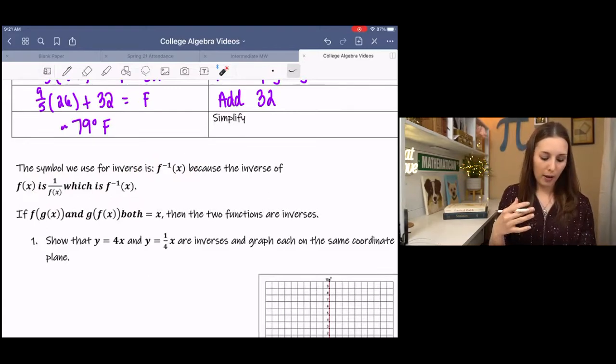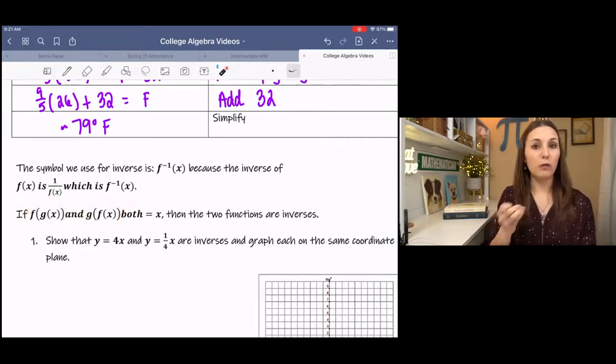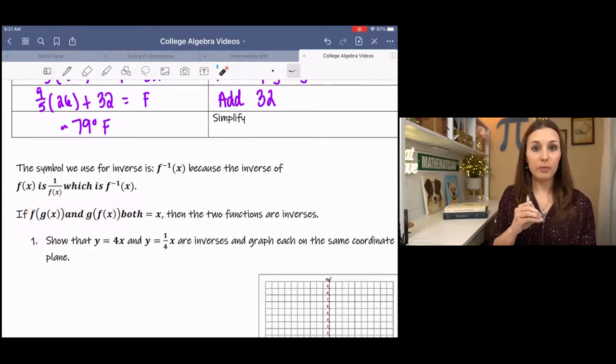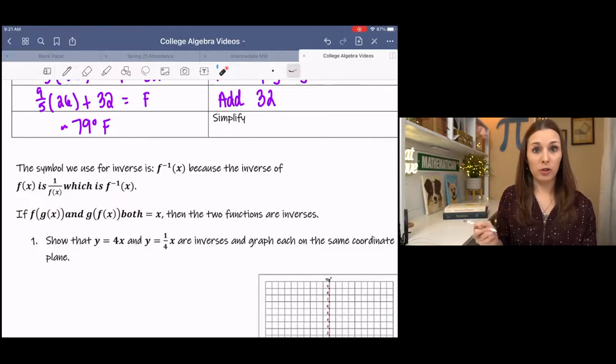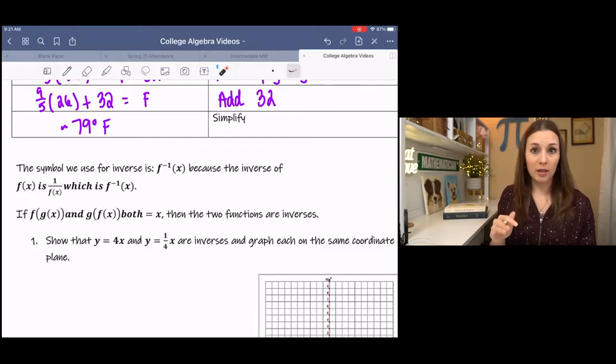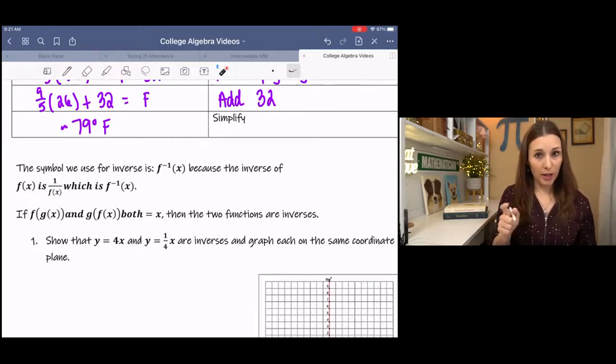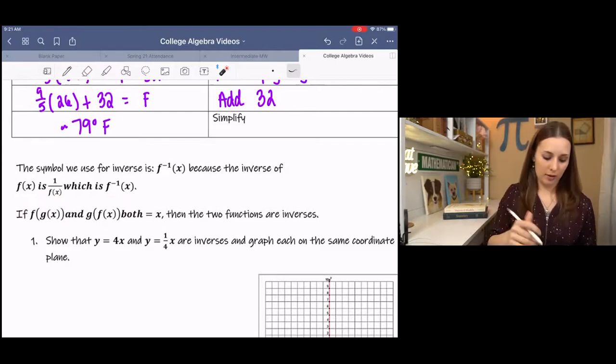But if you have instead equations or functions, then you can use composition of functions to determine if the two functions are inverses. If they both equal X, then the functions are inverses. Now, if you do the first step and you don't get X, then you're done and you know that they're not inverses. But if you do get X, then you proceed to the next step and they have to both equal X.